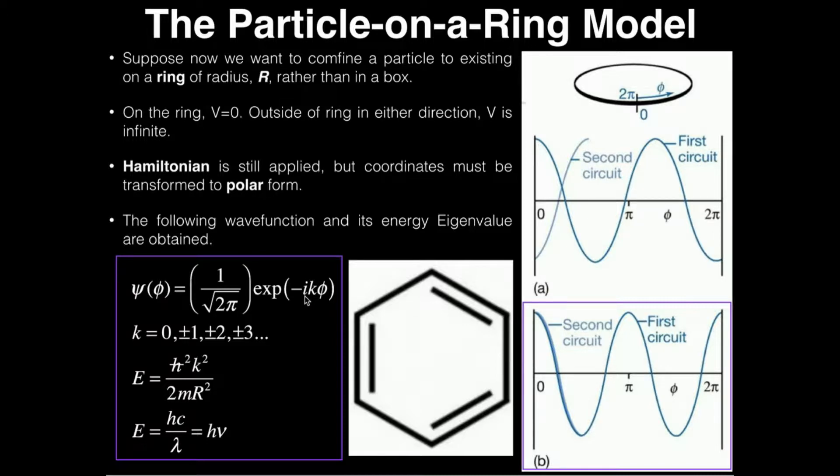This i is your imaginary number, a complex number. When we do probability calculations or the integral where we have to do the complex conjugate of the wave function, the complex conjugate will have this negative sign removed. That's going to play a role in why dealing with this wave function is so easy.